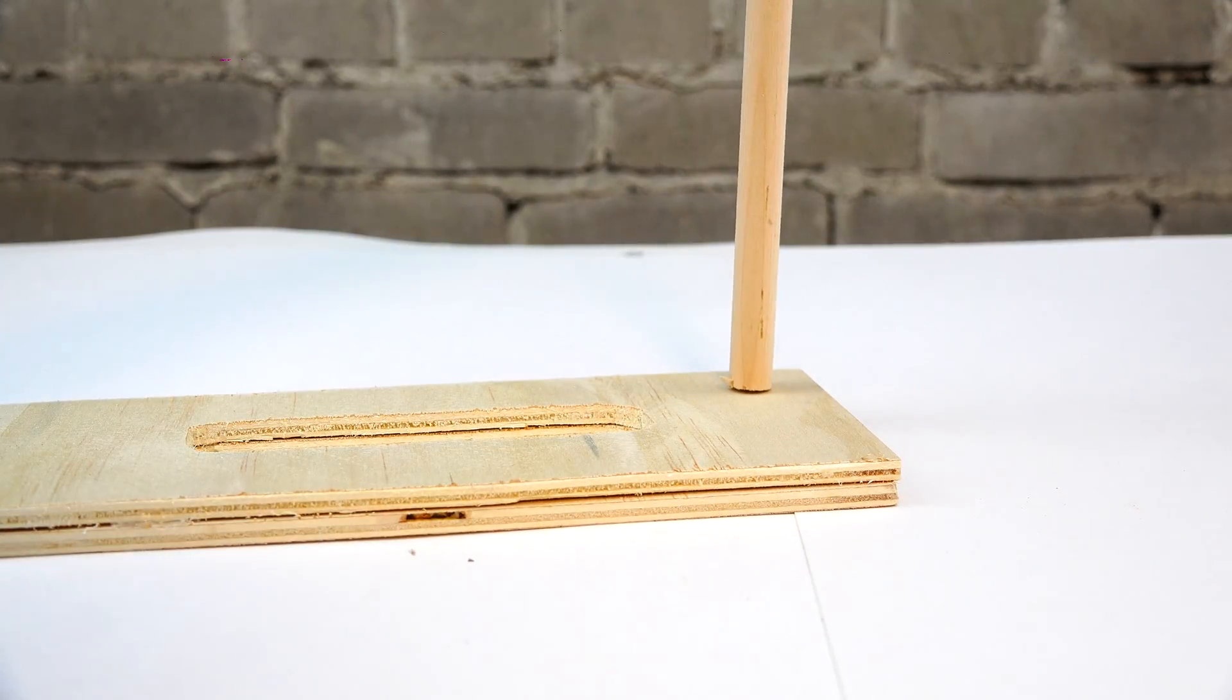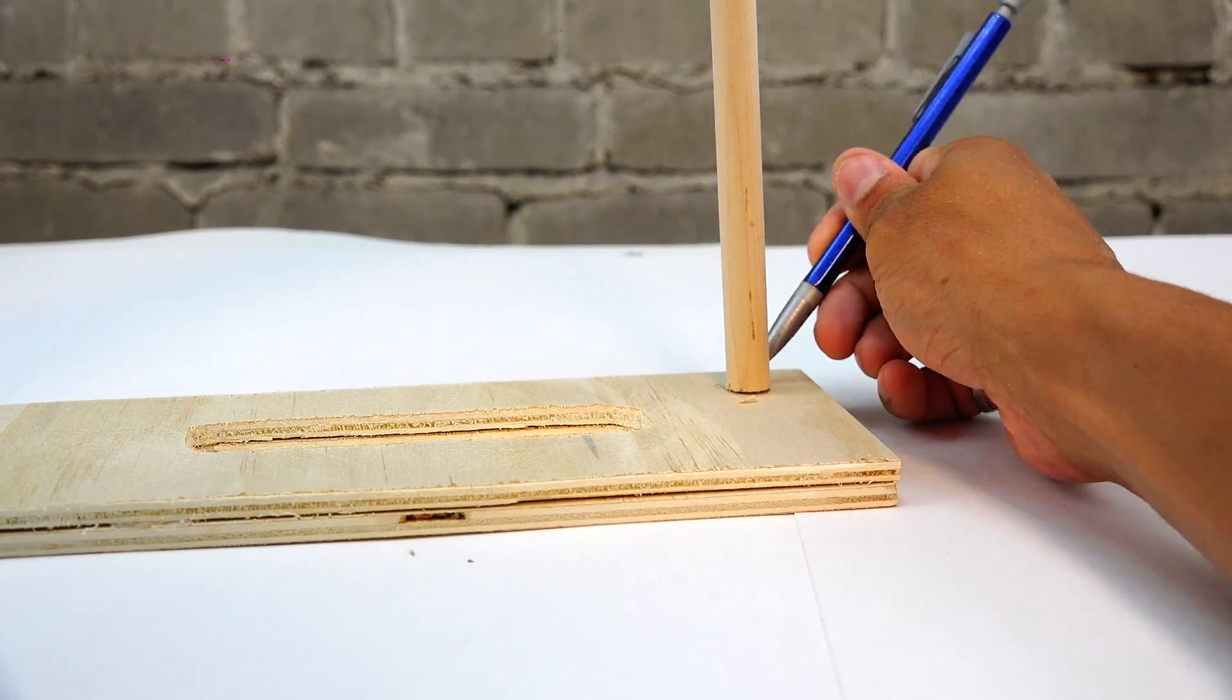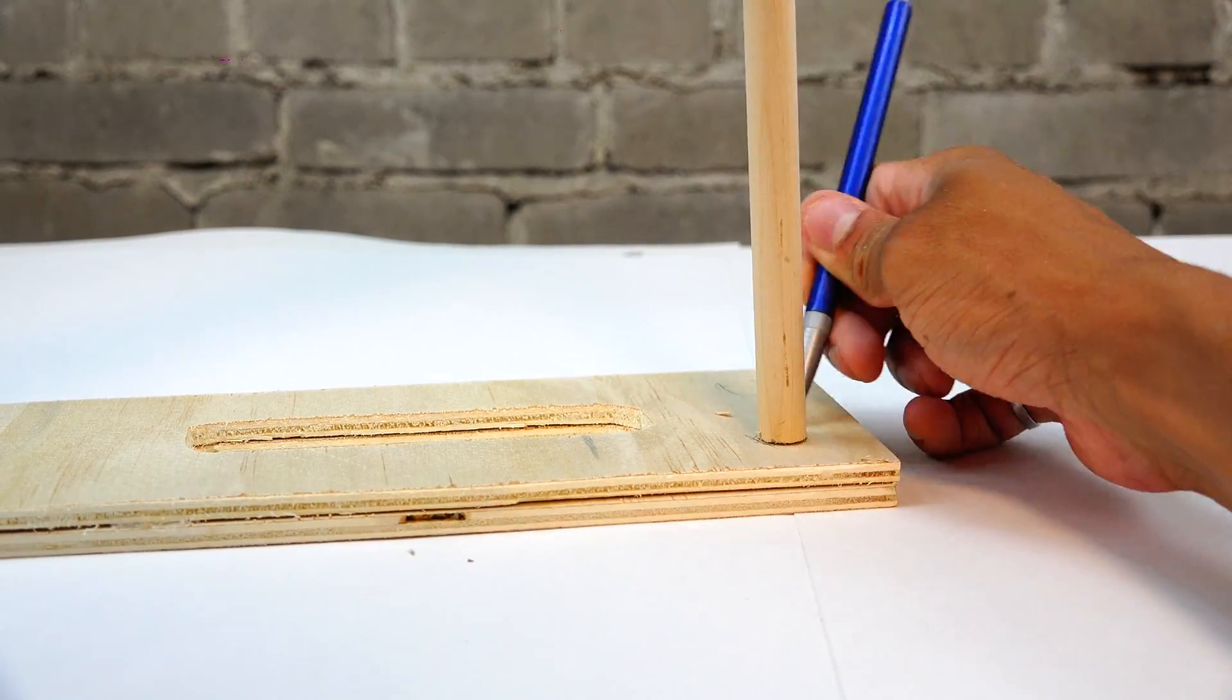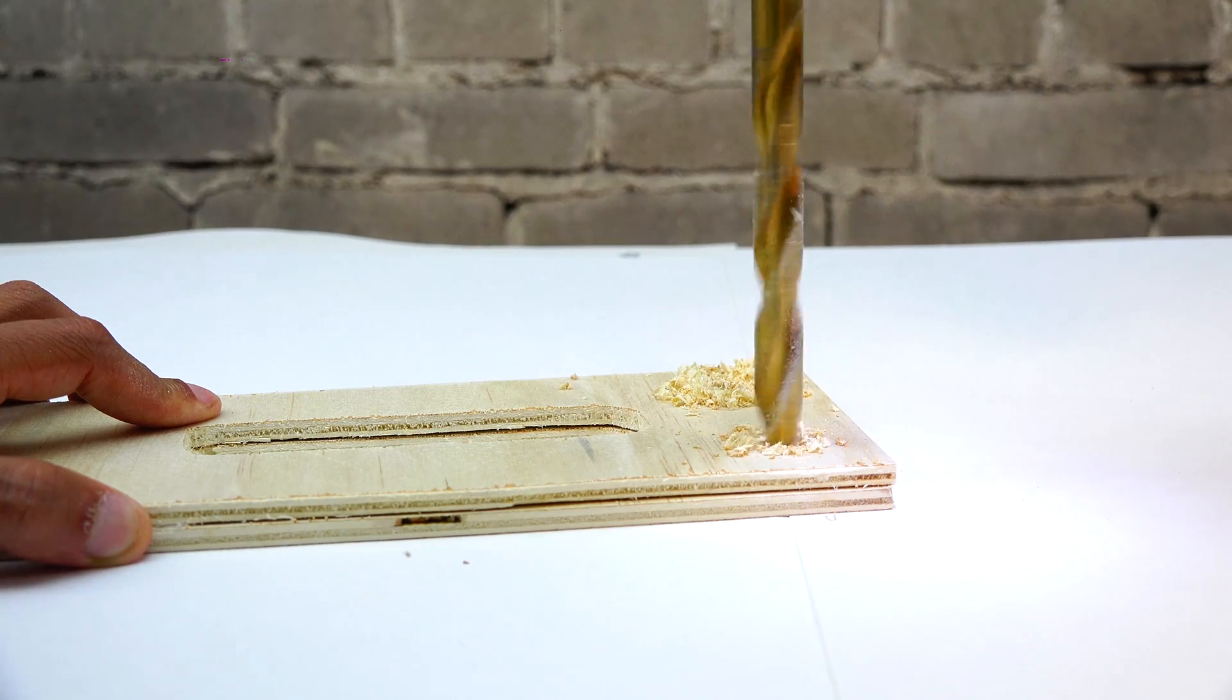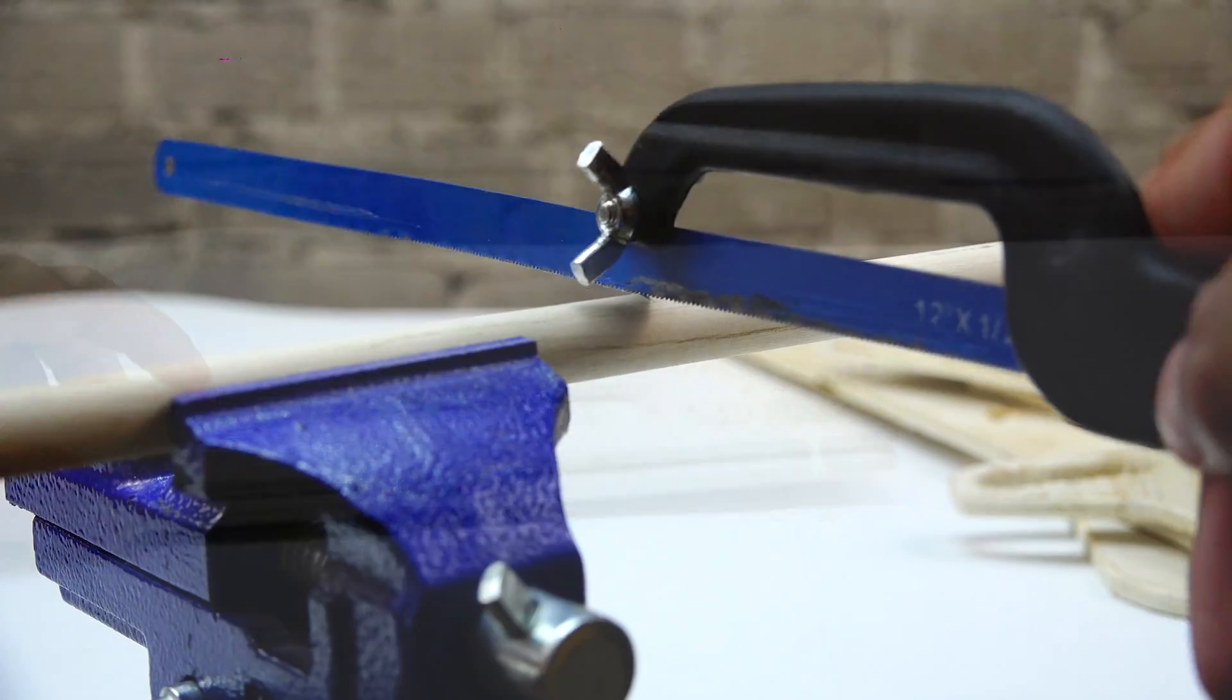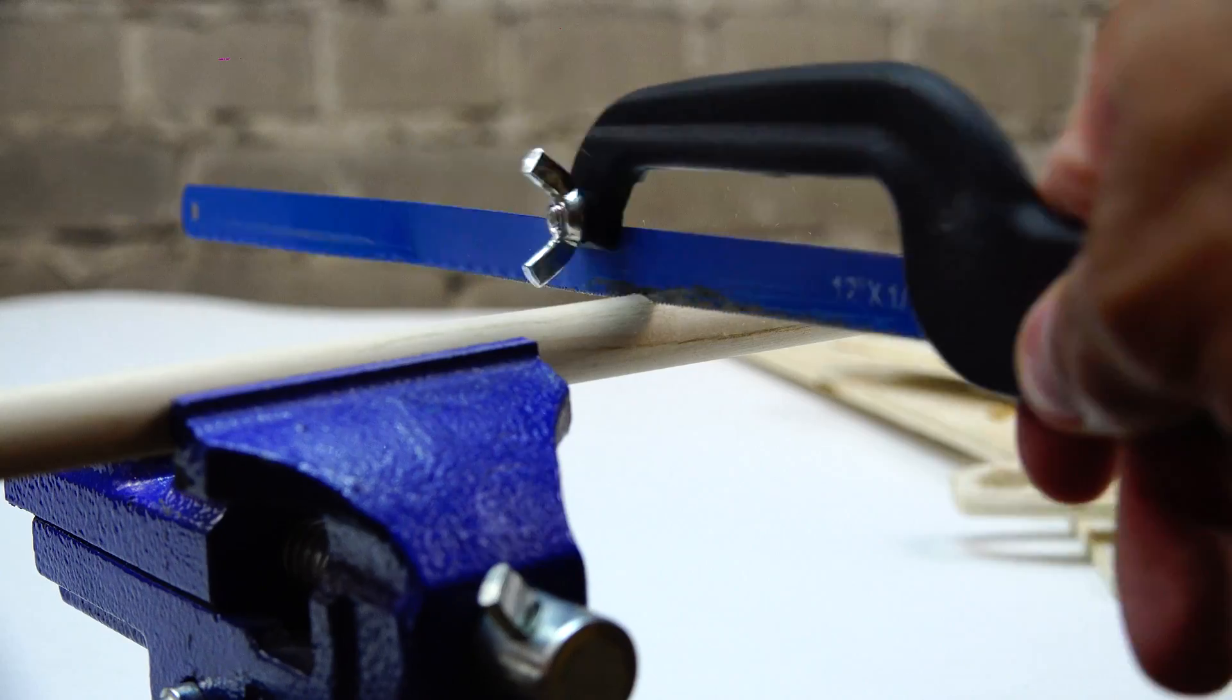We're also going to need to put a few more holes in these pieces of wood for dowels that are going to be the structural components. You want to put those far enough apart where you'll be able to fit your wrist.